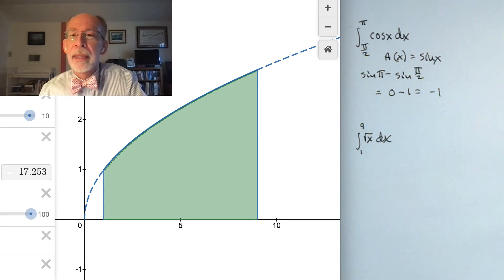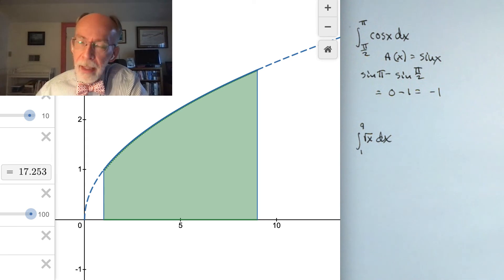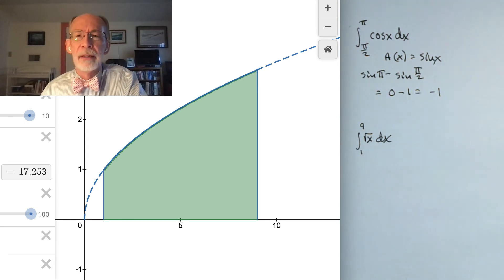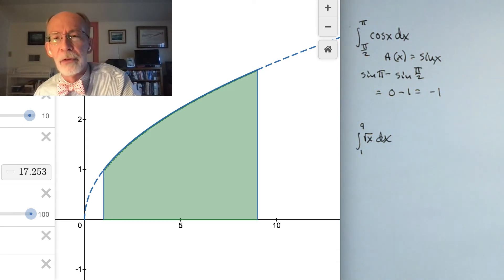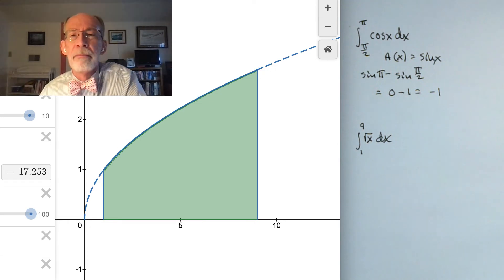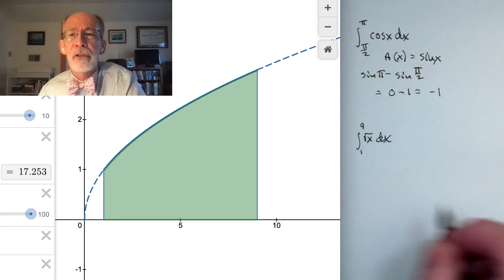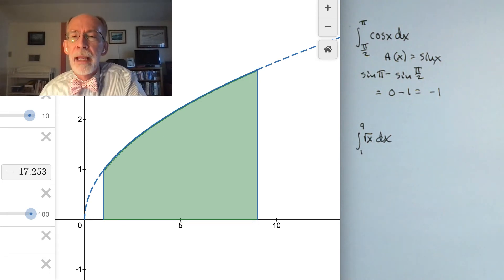So what's the antiderivative, if I can use that term, reverse derivative, underivative, of the square root of x? Well, another name for the square root of x is x to the 1/2. And so if you think about doing the power rule in reverse, the power rule, when you're differentiating, you reduce the exponent by 1.